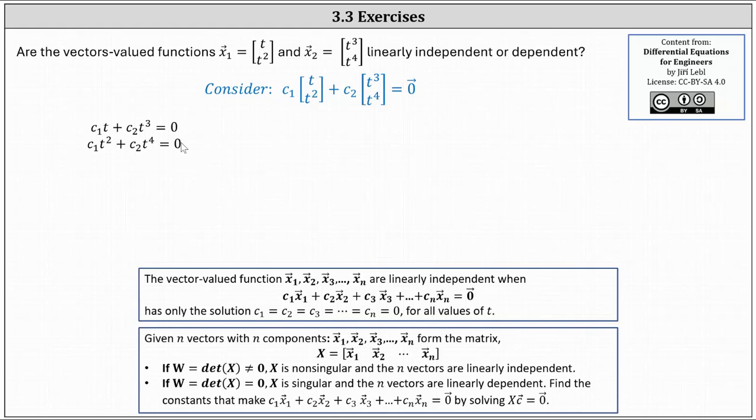Now recall, in order to be independent, the system must only have the solution c1 equals c2 equals zero for all values of t. Let's consider the value of t equals two. If t equals two, notice the equations are 2c1 plus 8c2 equals zero and 4c1 plus 16c2 equals zero.